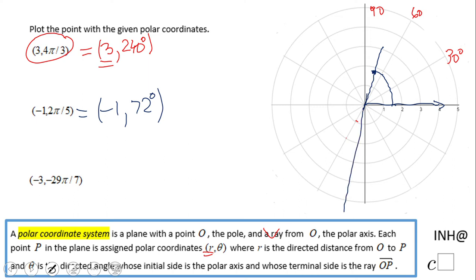You're going to move the opposite direction, which is going to be right here. This is the point. So be careful of this negative - you have to move on the opposite side of your terminal side of your angle of 72 degrees.